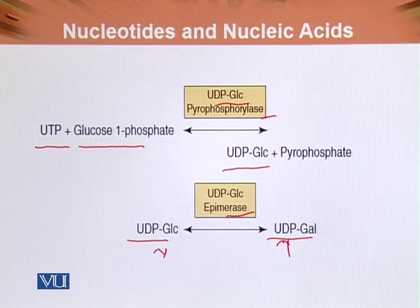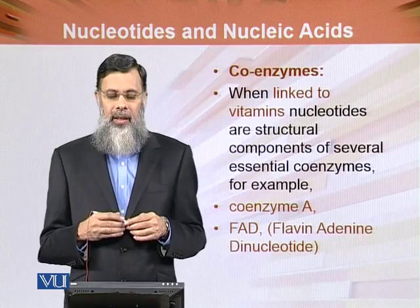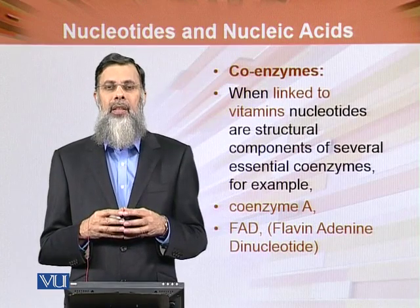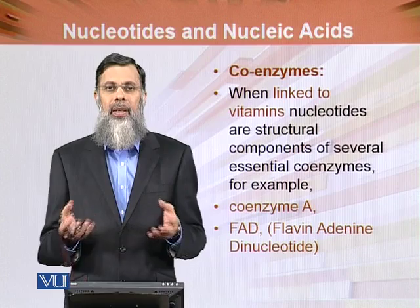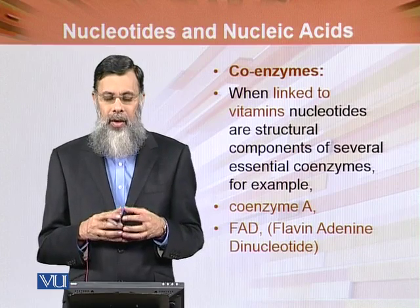Ultimately, UDP-glucose is used in the synthesis of starch or glycogen or other products in the body or in plants. Another important function of nucleotides is that they act as coenzymes.